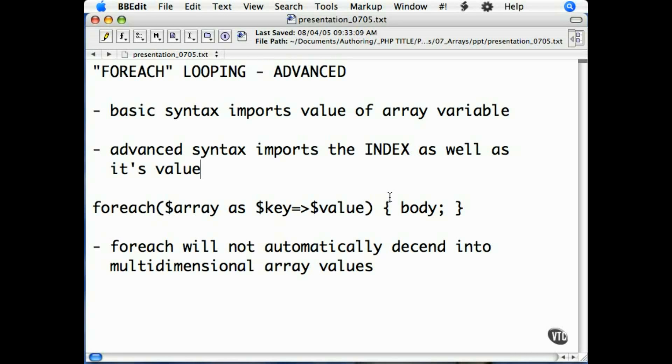The basic foreach syntax that you know will import the value of the array element into the loop for you to use in your operation. However, as you know, an array can also have a key for that element, since the array works on a name-value pair basis. What happens if you want the key in the array as well?